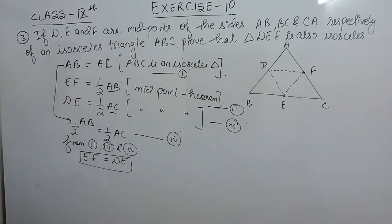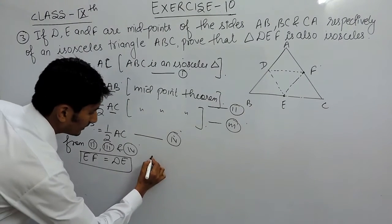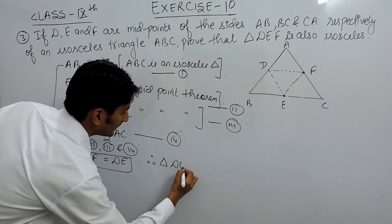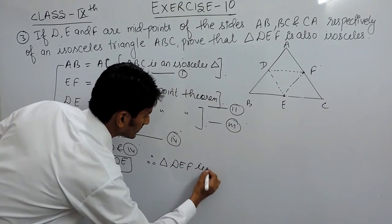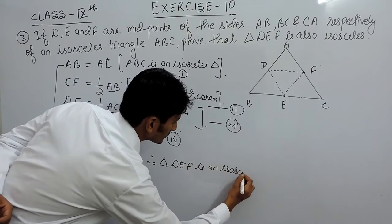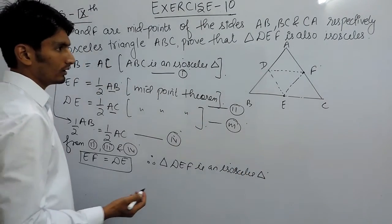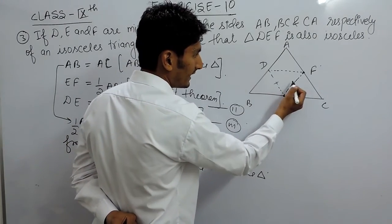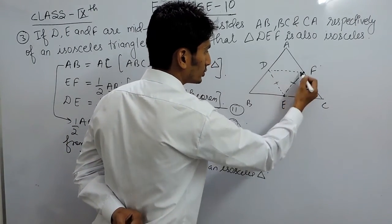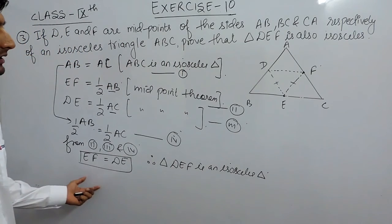Since in triangle DEF two sides are equal, clearly triangle DEF is an isosceles triangle. This is because this side and this side are equal in this triangle, so this must be an isosceles triangle. This is how we can solve this.